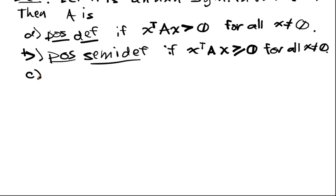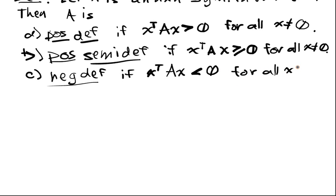C, we say negative definite if x transpose A x is less than zero strictly for all x not equal to zero.